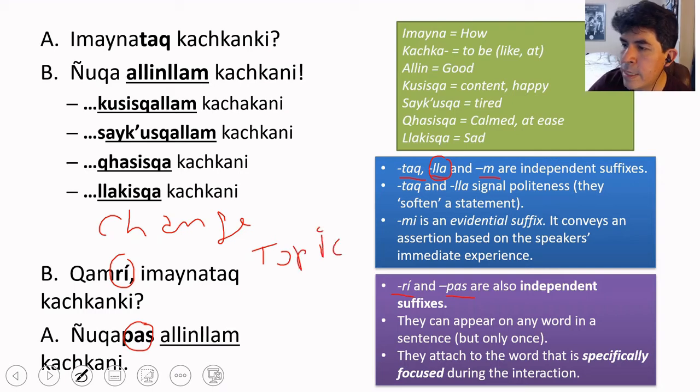So the function of ri is to change topic. So what it means is, what about you? So camri is what about you? Nyokari is what about me?